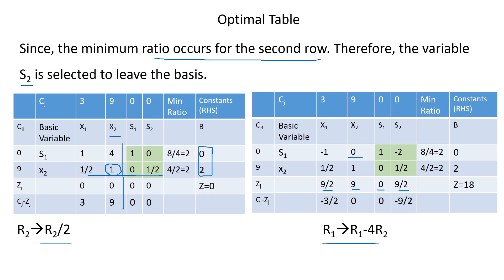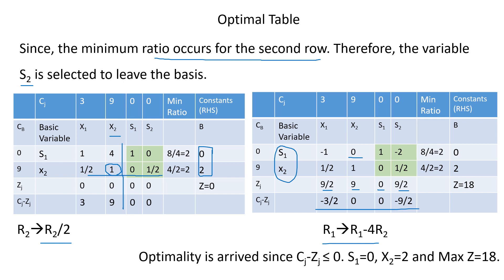Checking optimality: all cj minus zj values are less than or equal to zero, so optimality is reached for this maximization problem. The solution is: s1 = 0 and x2 = 2, giving maximum Z = 18. Since the basic variable s1 has a value of 0, there is degeneracy — confirming that this is a degenerate solution where at least one basic variable equals zero.